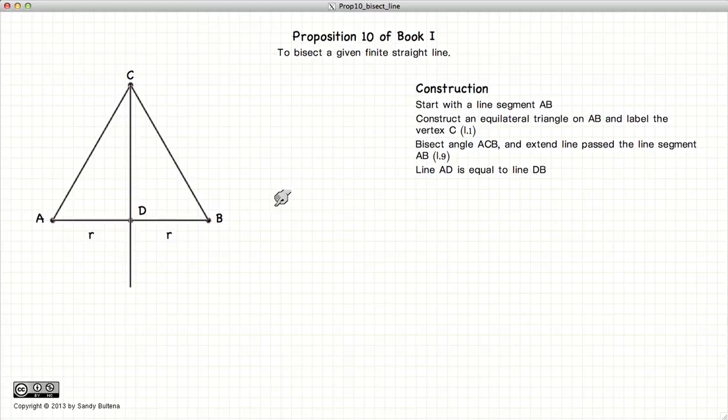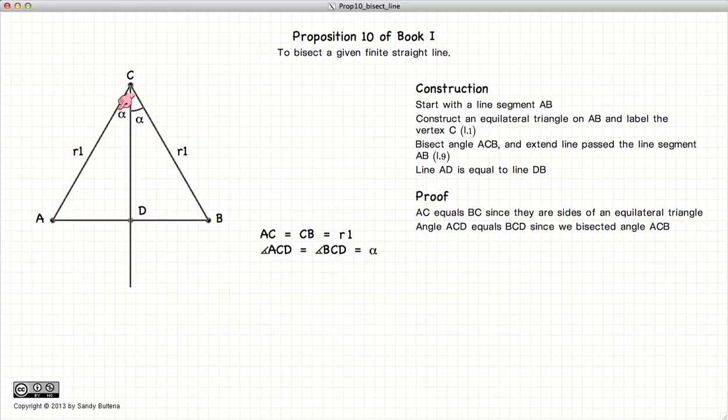So how do we go about proving this? Well first we know that this line and this line are equal in length since they are the sides of an equilateral triangle. We also know that this angle is equal to that angle because we just bisected it using the methods in Proposition 9.